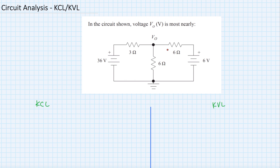Hello and welcome back to another video. In today's video we are going to solve a typical circuit analysis problem. We are given a circuit with voltage sources and resistors, and we are asked to find the voltage across this 6-ohm resistor right here as V0. I want to use two methods in parallel — KCL and KVL — so you can see side by side the difference between the two and how to approach a problem.